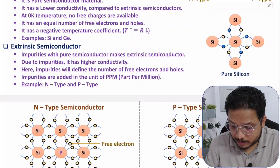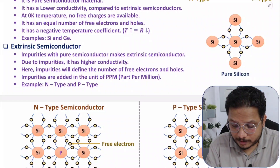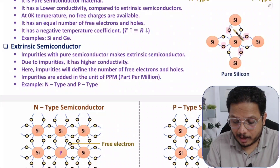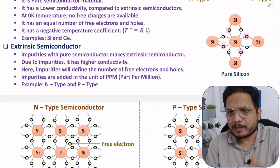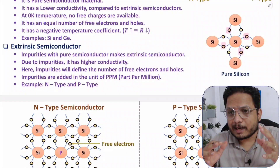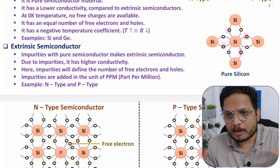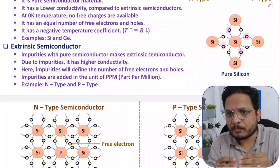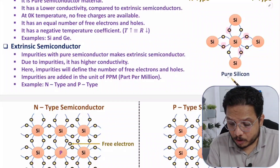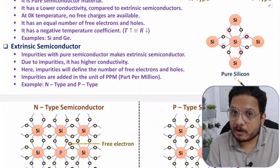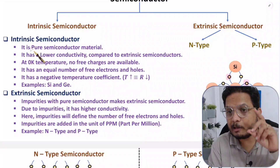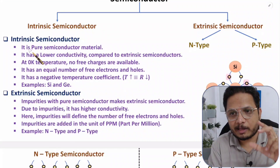These four electrons are connected with covalent bonds with their neighbor atoms. As all the electrons are connected in a covalent bond structure, there is no free charge carrier in pure silicon. Pure silicon is referred to as intrinsic semiconductor material, and it has lower conductivity.